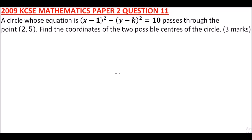2009 paper 2 question number 11. We are told a circle whose equation is (x - 1)² + (y - k)² = 10 passes through the point (2, 5). Find the coordinates of the two possible centers of the circle. You get three marks. Now we have been given this equation of the circle.